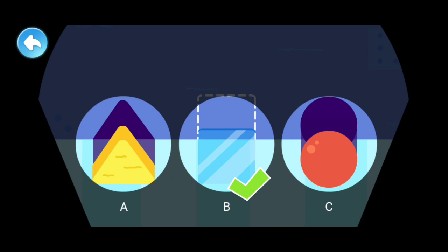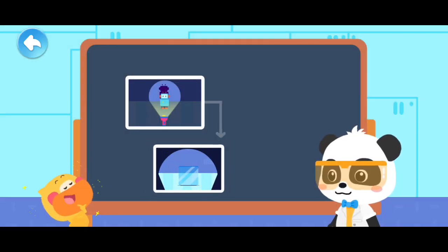Correct answer. The transparent glass piece doesn't have a shadow. Transparent objects don't have shadows.